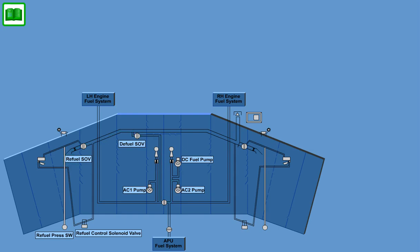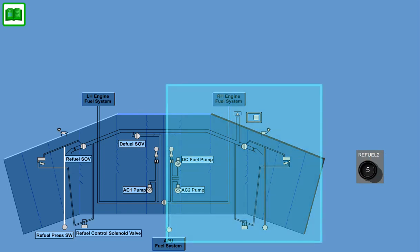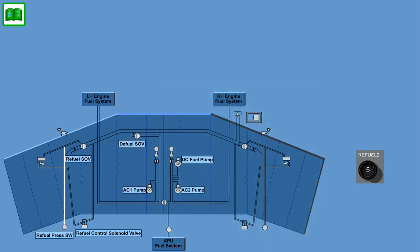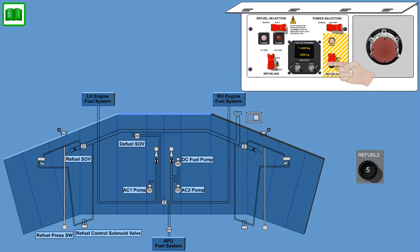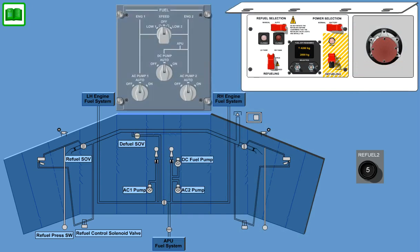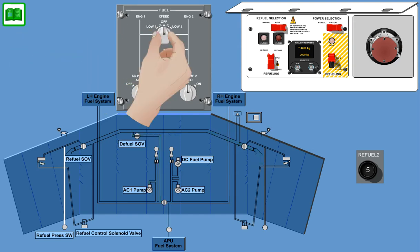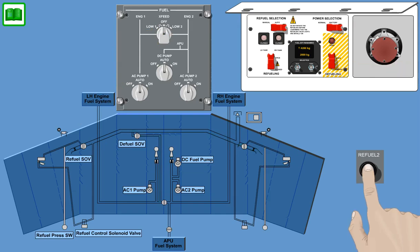To transfer fuel from the left-hand tank to the right-hand tank, the cross-feed valve also has to be used. The refuel 2 circuit breaker has to be pulled to de-energize the right-hand refueling system. Select the defueling switch to open on the refuel-defuel panel, then select AC pump 1 to auto and move the cross-feed switch to low 2. When the desired fuel transfer is finished, move the respective switches to off or closed and reset the circuit breaker.